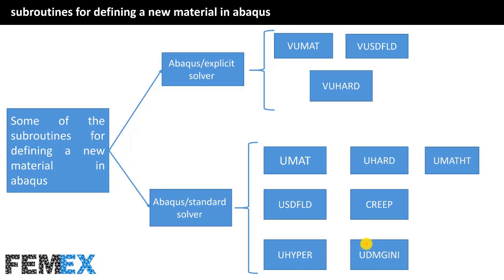For example, if you want to define a model for crack initiation in bones, you must use the UDMGENIE subroutine because Abaqus does not have an appropriate initiation model for bones. Or by using USDFLD or VUSDFLD subroutines, you can modify the available mathematical models in the property module and define a new material model based on those existing models.